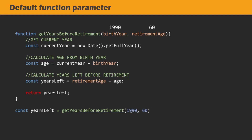What will happen if we don't pass a value for a function parameter while calling a function? For example, if we call 'getYearsBeforeRetirement' and pass 1990 for birth year but don't pass any value for retirement age, then retirement age will be assigned the value undefined. When undefined is used in arithmetic operations, the result may be unexpected and can introduce bugs in your program.